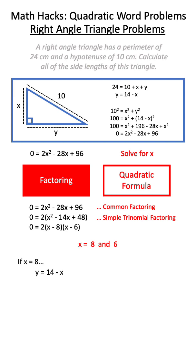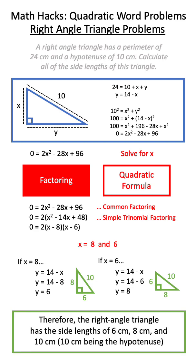If x is 8 and we sub this back into our perimeter equation, we get a y value of 6, and if we do x of 6, we get a y value of 8. These are the exact same triangles.